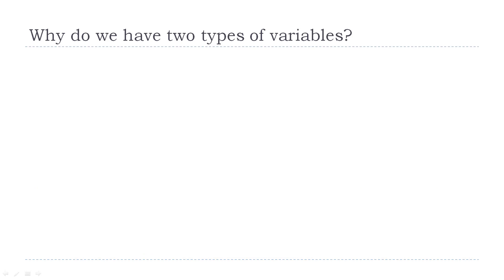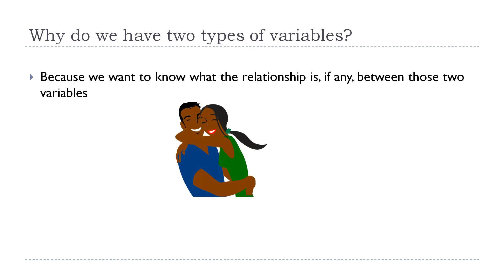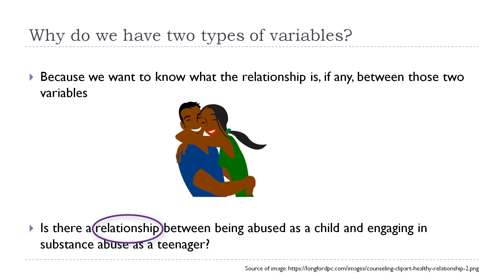Now you may be asking yourself: why do we have two types of variables? Because in research we want to know what the relationship is, if any, between those two variables. That is the purpose of research — trying to understand why something is happening. If something is happening, then something else is making that something happen. And when I talk about relationship, I'm not talking about a personal relationship — it's asking questions like: is there a relationship between being abused as a child and engaging in substance abuse as a teenager? That's what we're getting at — whether or not that relationship exists between those two variables.